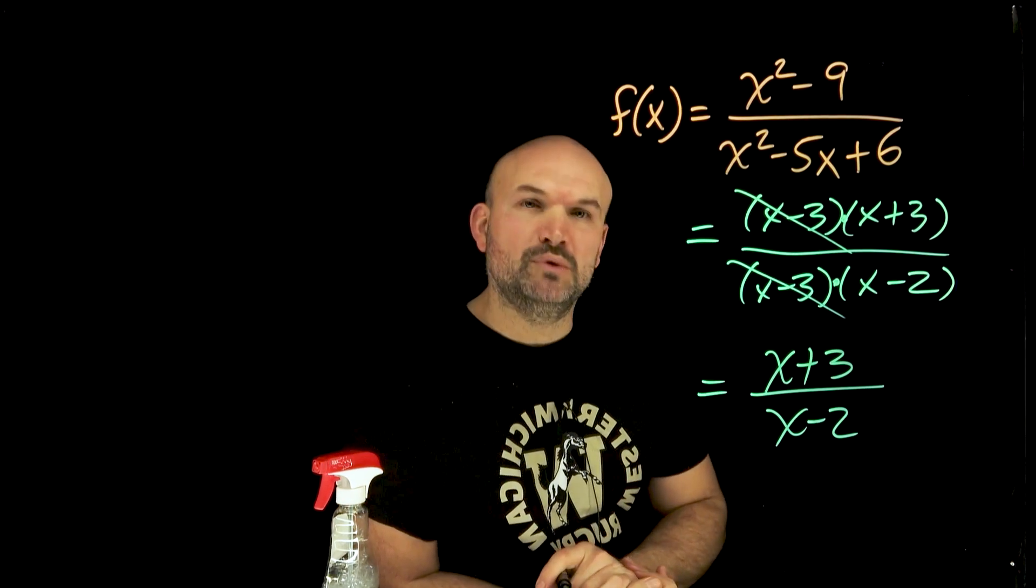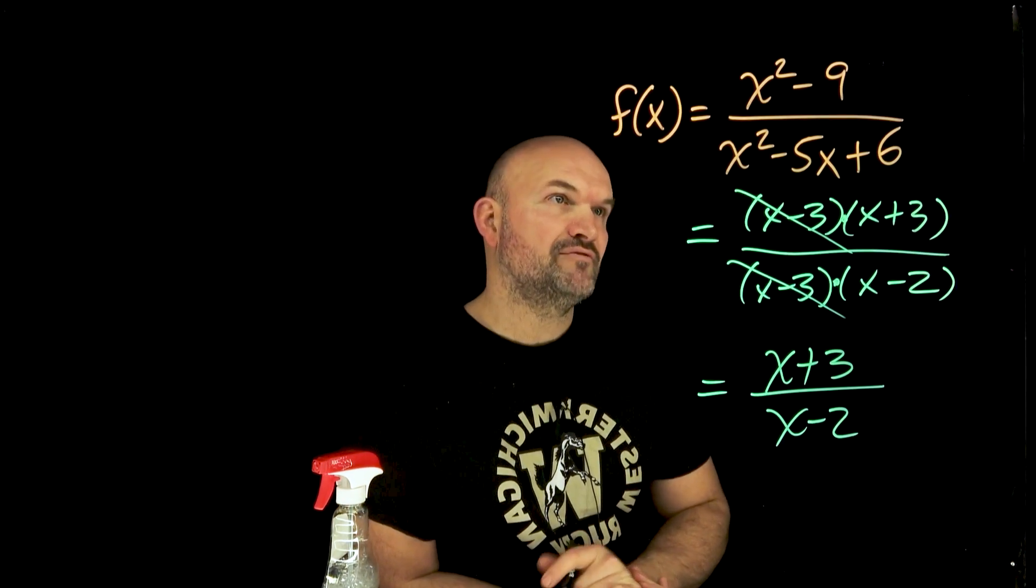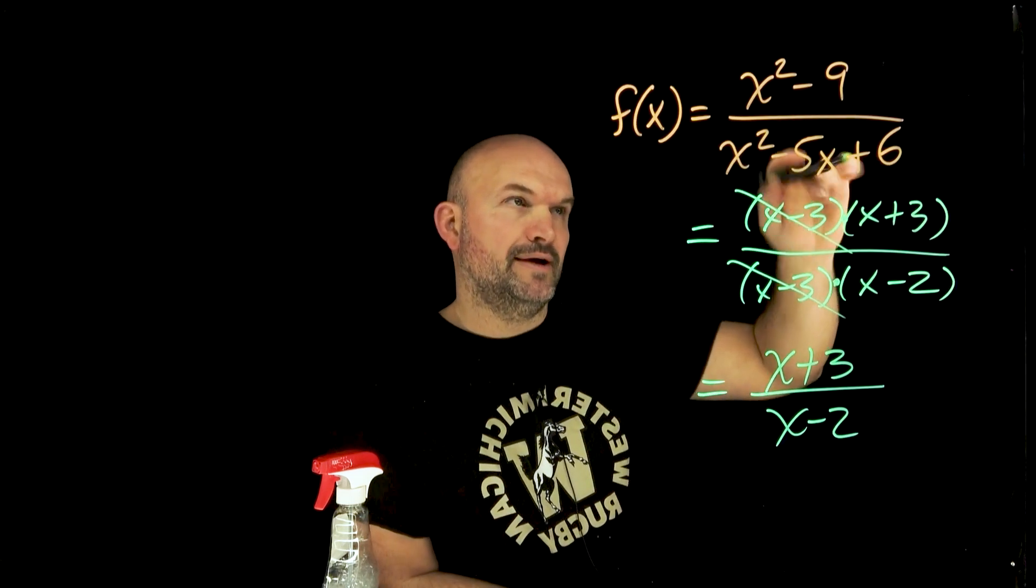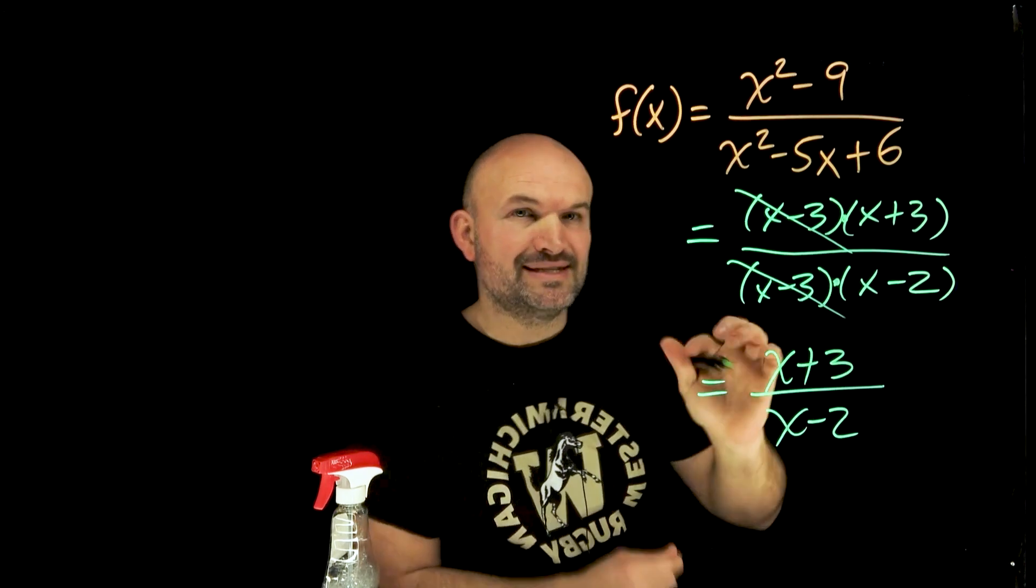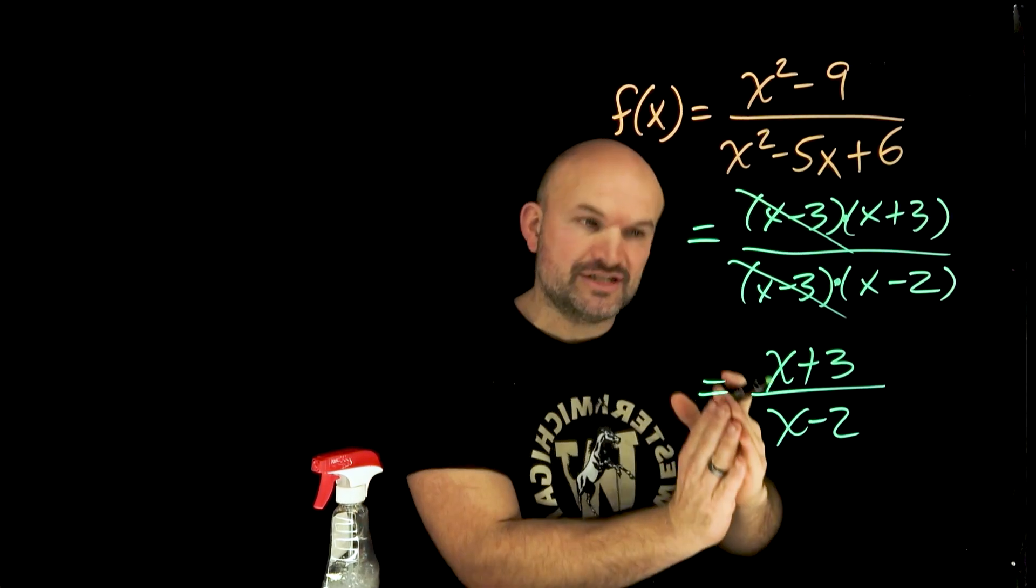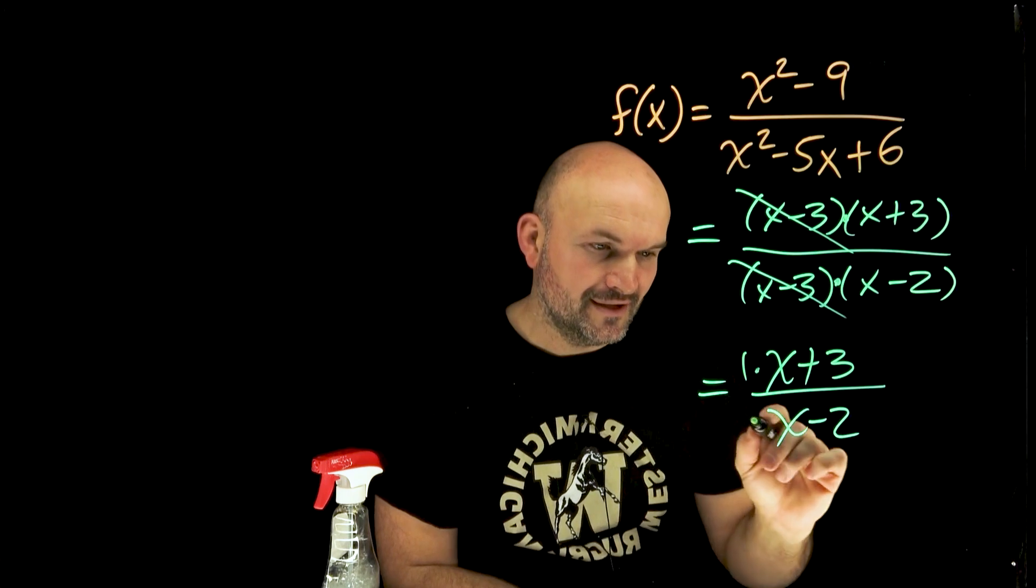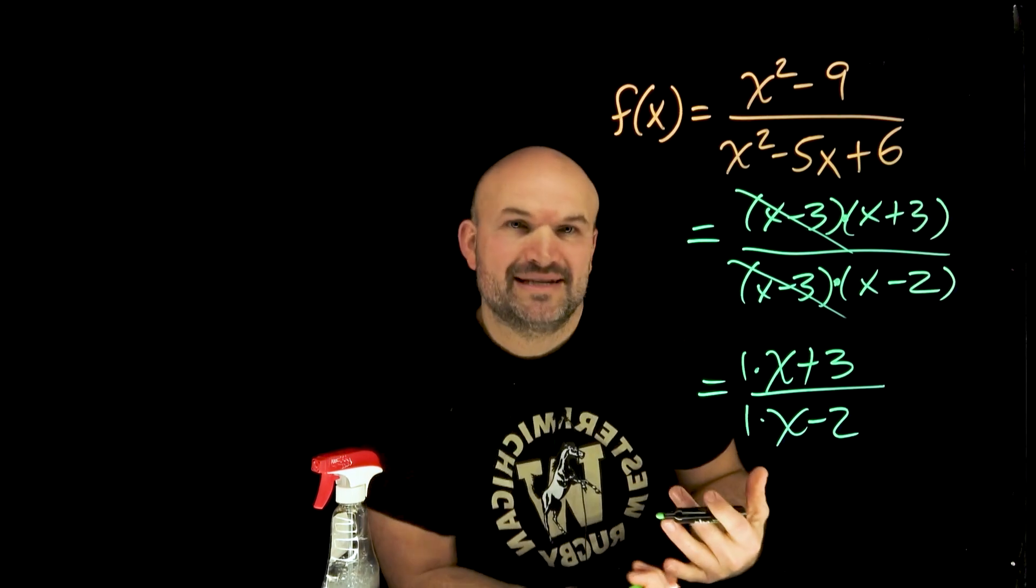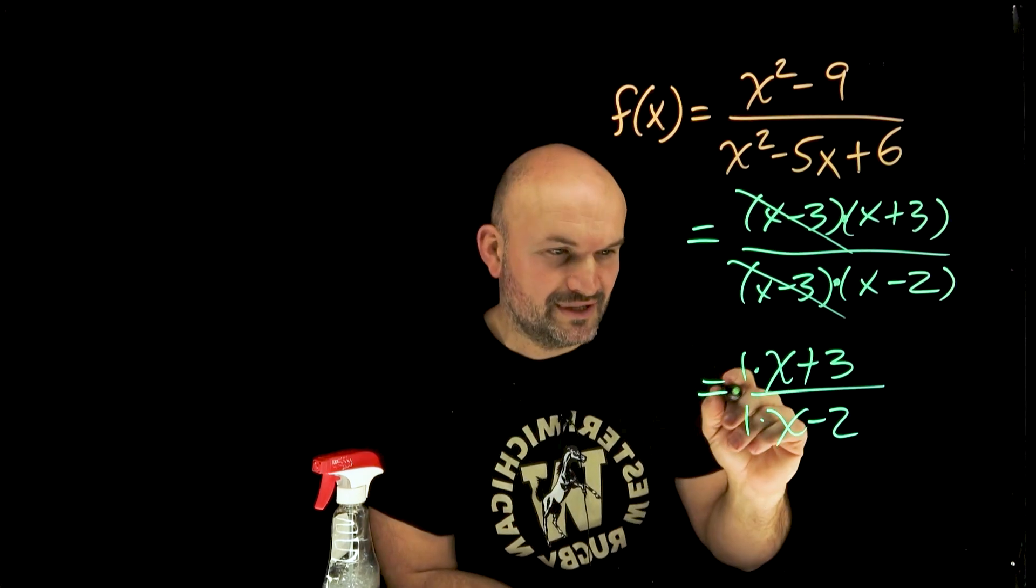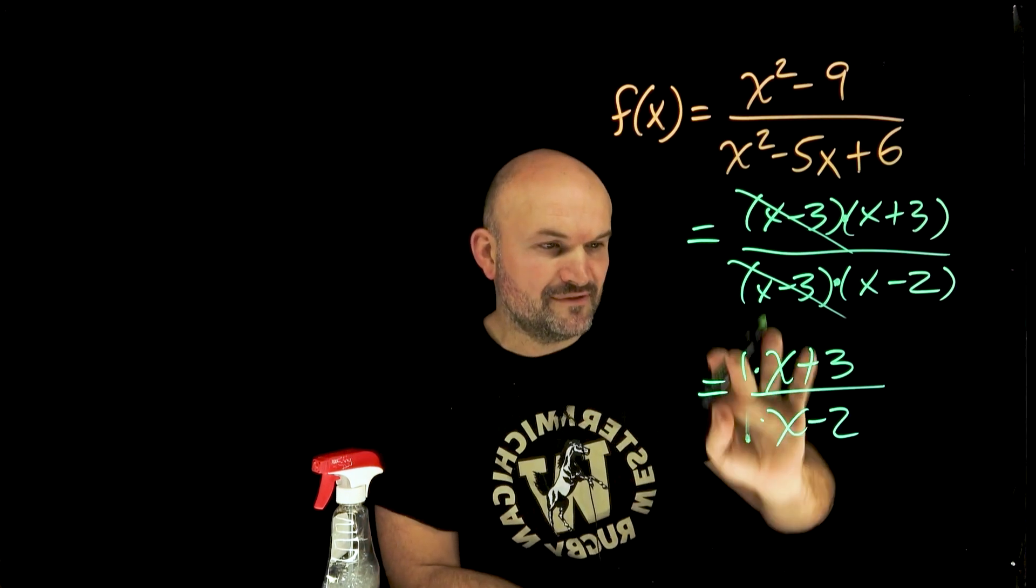So here's where the removable and non-removable discontinuities come from. We have this expression, this original function. Through the simplifying process, the x minus threes got removed. They technically just divided to one. You could technically still say they're there, right? They're just divided over to one because anything divided by itself is just equal to one.